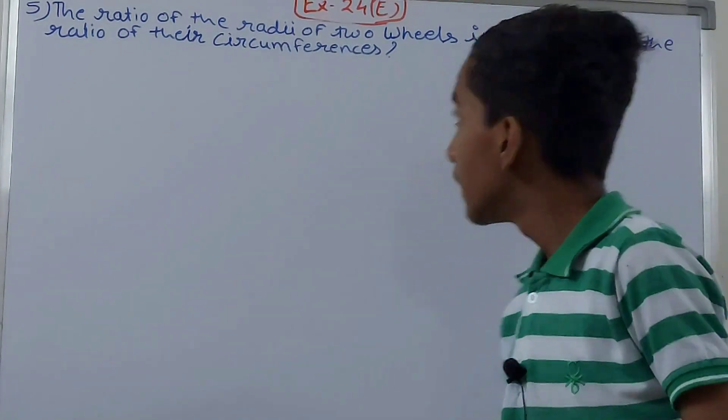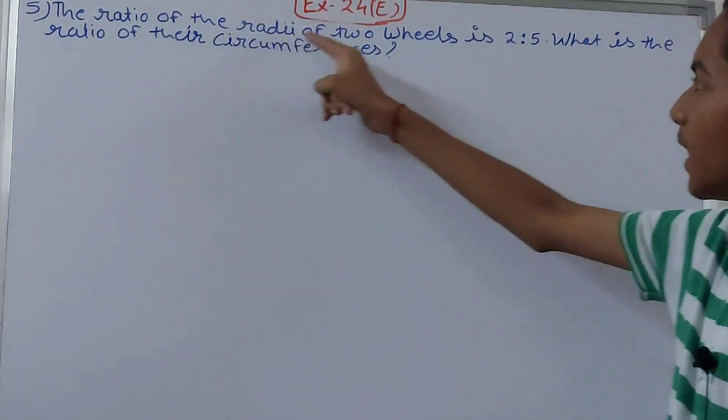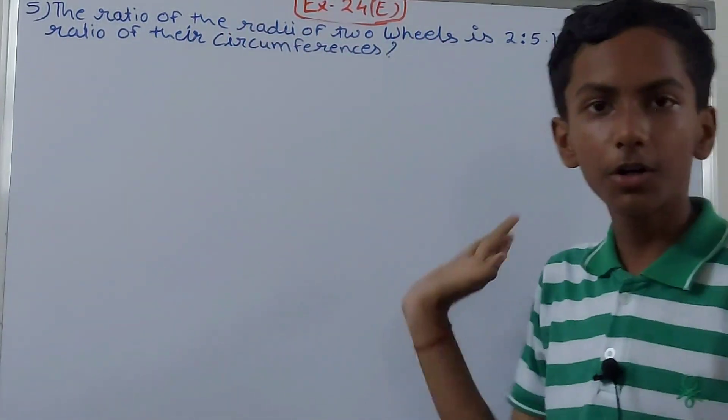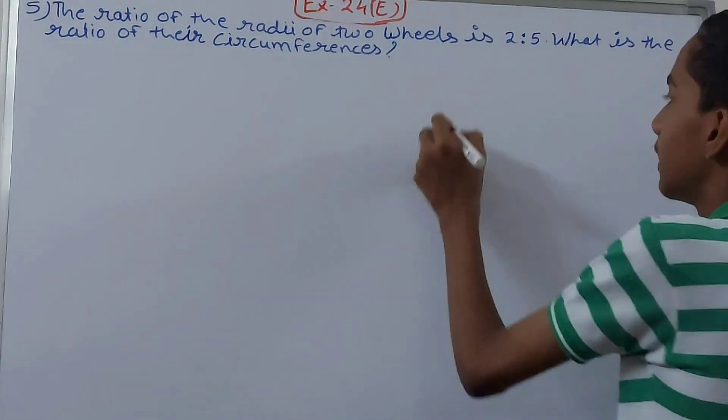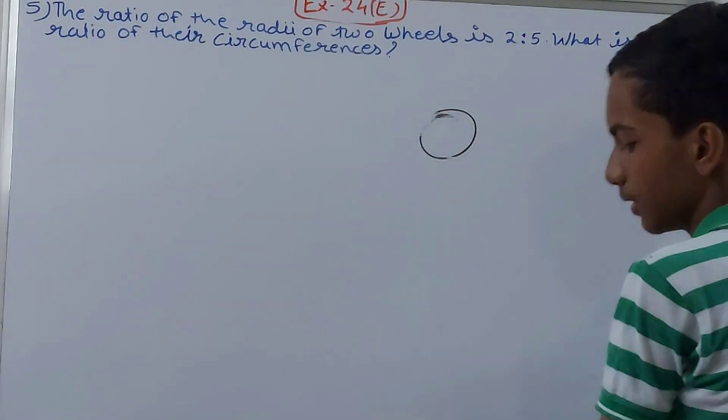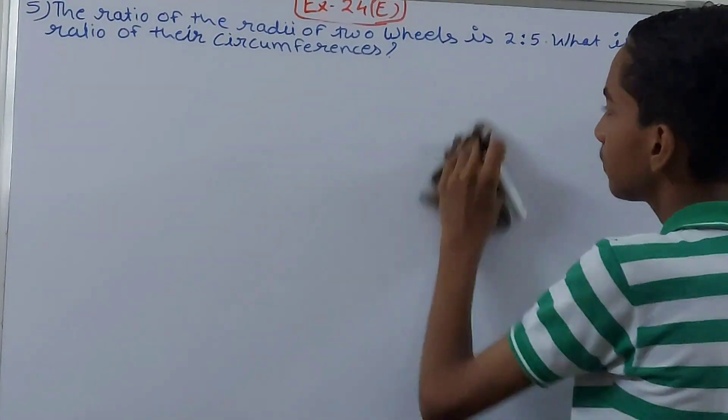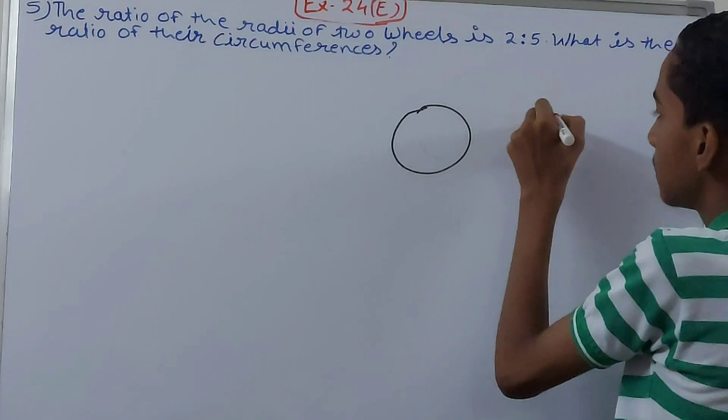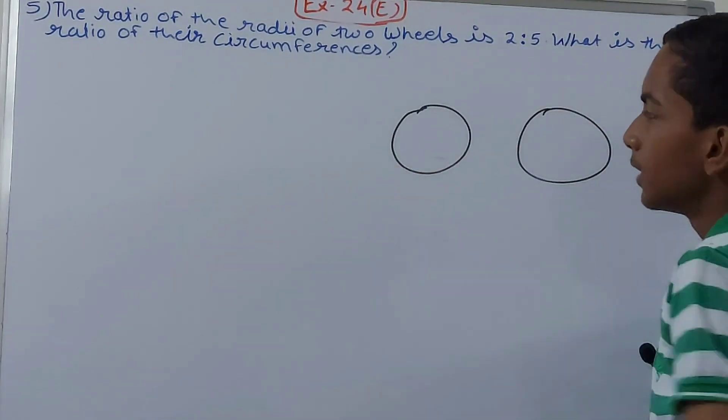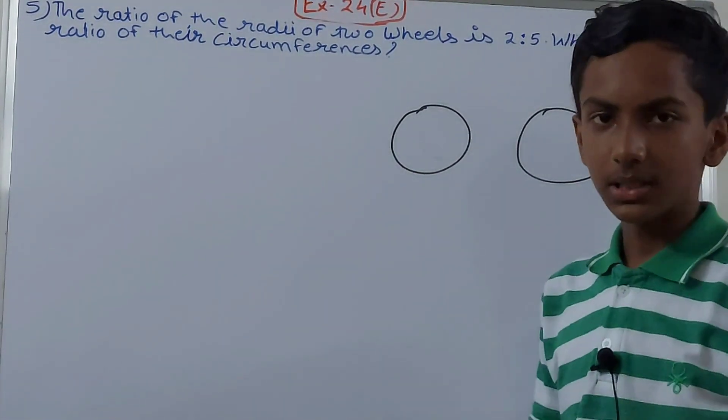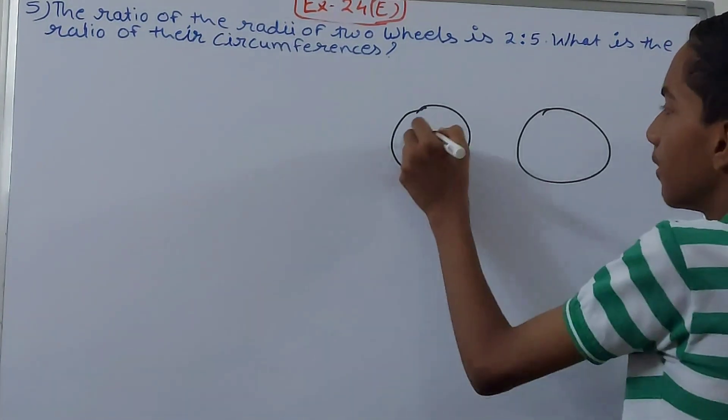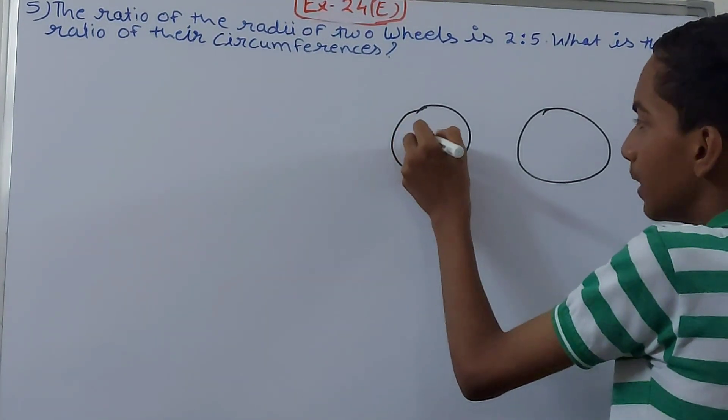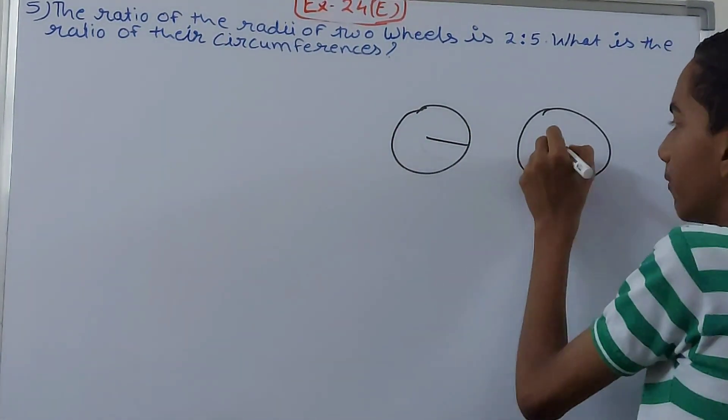So ratio of the radii of two wheels - we have got two different wheels. Suppose this is one wheel and this is another wheel. The radius of these wheels means from the center point to the boundary, like this. This is the radius.